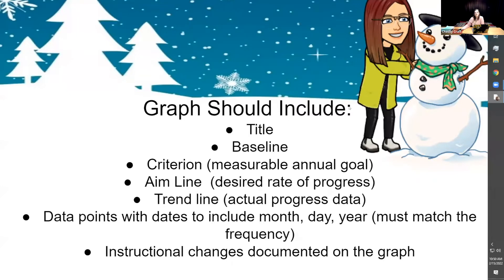Your progress monitoring graph needs to include: the title, baseline, criteria, the aim line, and the trend line. Data points must include dates — month, day, and year — and must match the frequency you've outlined in the goal, whether that's twice a month or weekly. Whatever frequency you've specified in the goal, you must meet that criteria.